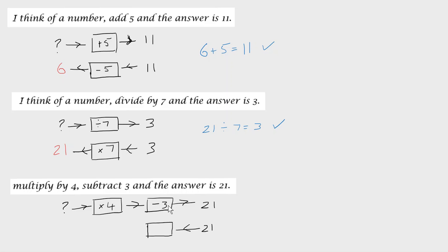Minus 3, subtract 3, so the opposite of that is adding 3. The next thing we do, multiply by 4, well the opposite of multiplying by 4 is dividing by 4. And that will give us our answer.